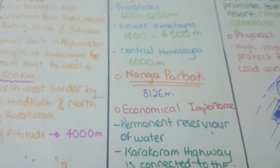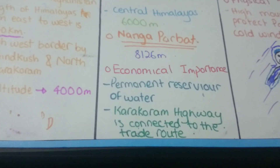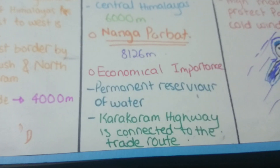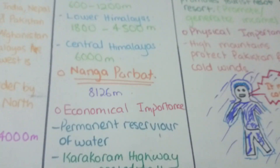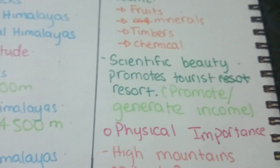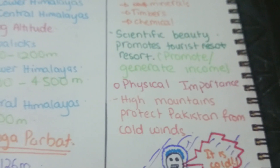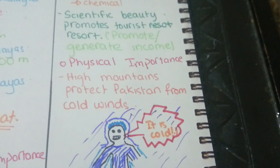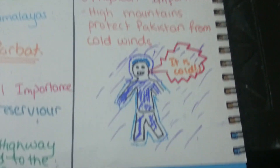Nanga Parbat is the highest peak of the Himalayas in Pakistan. The economic importance of the Himalayas includes permanent water reservoirs, and the Karakoram Highway connects to trade routes. Sources of valuable income include fruits, minerals, timber, and chemicals. Scientific beauty promotes tourist resorts, providing income to local people. Physically, high mountains protect Pakistan from cold winds.